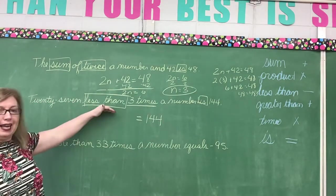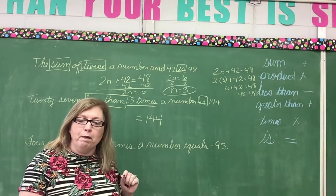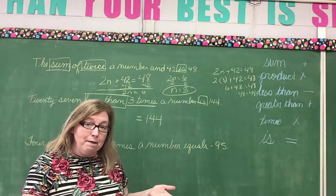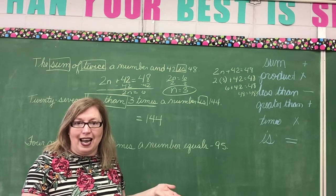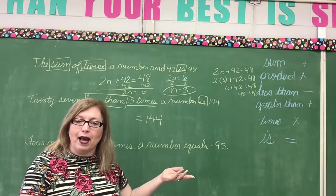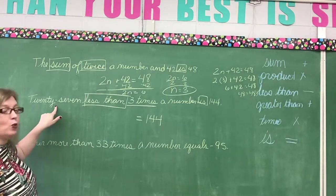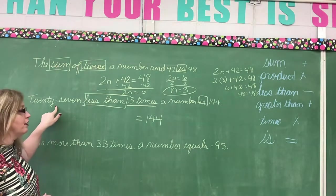27 less than. Now wait a minute. When you have a subtraction problem. When I'm saying you had six pieces of candy. You ate two of them. So you have two less than six now. The two comes after the six because you're subtracting. Correct? That means that the 27 is going to come after whatever we're subtracting it from. Okay. So we're going to put minus 27. Whatever is we're going to put in front of it.